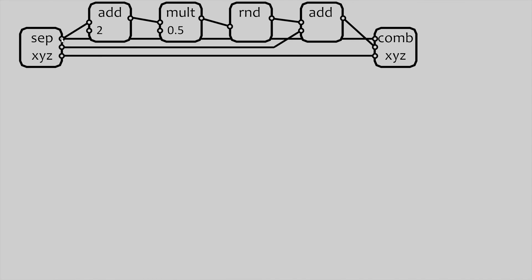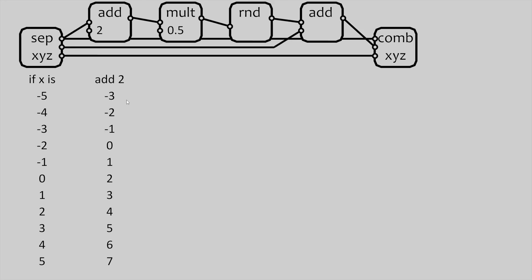The first thing I noticed from this setup is the X output of this Separate XYZ goes right into the X input of the Combined XYZ, same with Z. So those two values are going to remain the same — the only thing that changes is the Y value. The pattern is coming out of the X output of the Separate XYZ. So I'll throw up some X values and trace them through all these nodes. The range I'm choosing is negative five to five. The first thing we do is add two — that just moves everything up by two. The next thing is multiplying by 0.5. You might ask why we didn't just divide by two — multiplication is a much faster process than division, so it's preferable to do it this way.